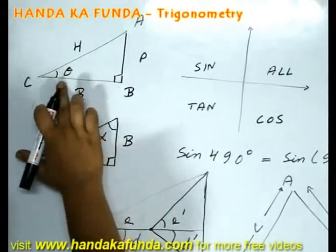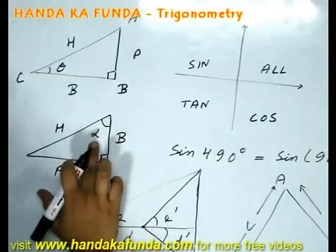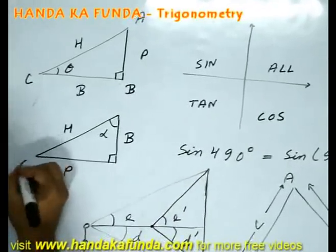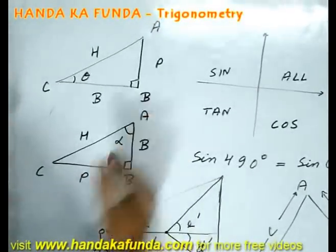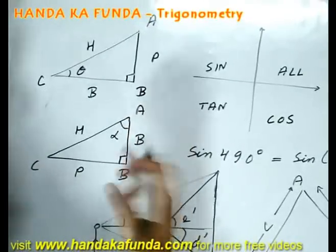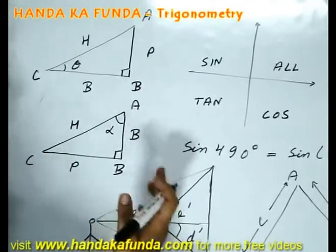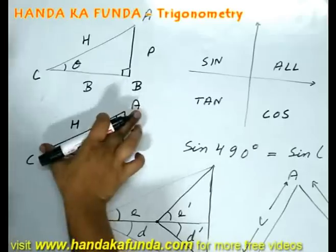If instead of theta my angle of concern was alpha then my perpendicular and base would change. Then my perpendicular will become BC and my base will be AB. So now my sin theta will be CB by CA and my cos theta will be AB by AC.